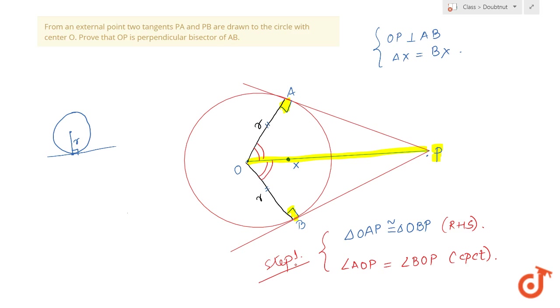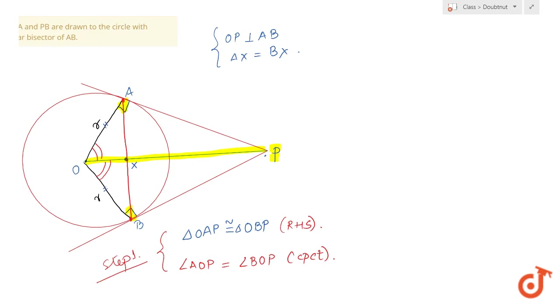Now what I'm gonna do is I'm gonna bring back my line AB. Let AB intersect OP at X. Now I'm gonna analyze two triangles, which are triangle AXO and triangle BXO.